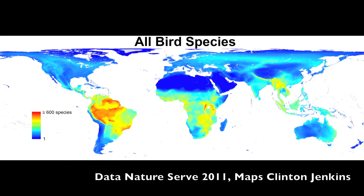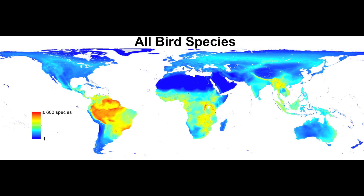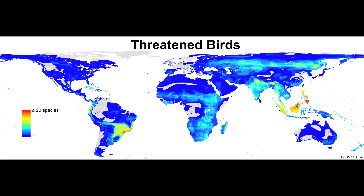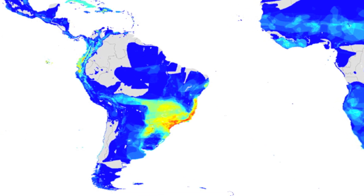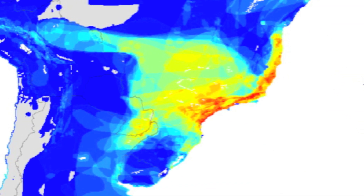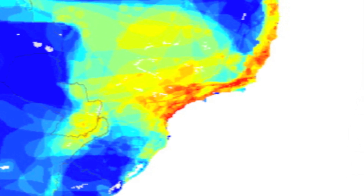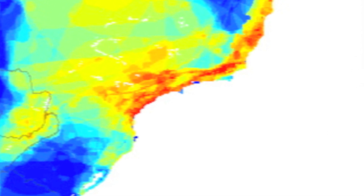The greatest species diversity is found in the tropical moist forests of the world, and bird species are an example of this, with high concentrations of birds in the Amazon, tropical Africa, and Southeast Asia. The greatest number of threatened species, however, is where geographically small ranges collide with excessive deforestation. A good example of this is the coastal forests of Brazil.